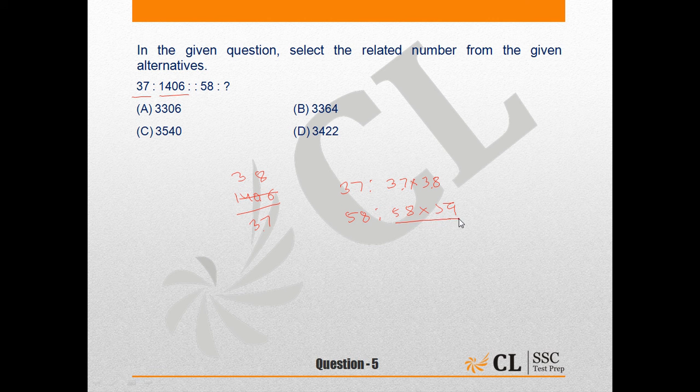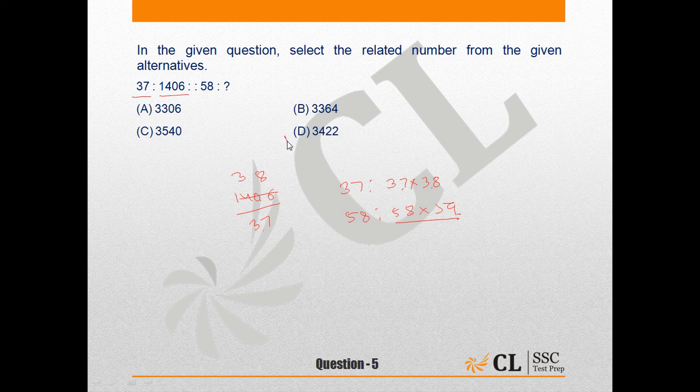So basically I have to calculate 8 into 9. I see that the last digit of 8 into 9 should be 2, and there is only one number with last digit 2. No need to exactly multiply 58 into 59, I got my answer option D.